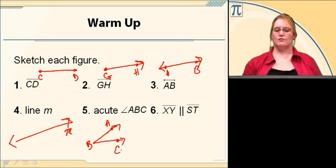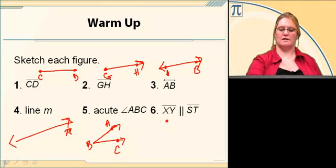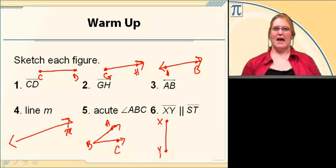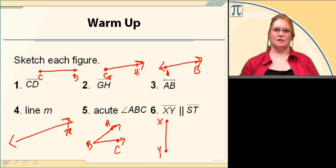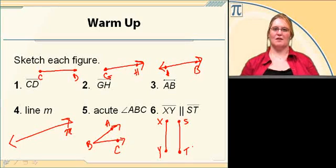Number six says segment XY is parallel to segment ST. So we're going to draw first a point at the top, X, draw a line down, another point Y. There's my first segment XY. I want parallel to ST, so that means it's going in the exact same direction, doing the exact same stuff. So I do a point, label it S, draw a line down, do another point, label it T. And there's two segments parallel.